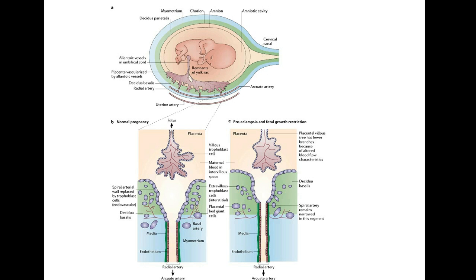Here is the picture. In normal pregnancy, there are villus trophoblast cells. When preeclampsia with fetal growth restriction develops, the placental villi become fewer, and you can see altered blood flow characteristics as well as changes in the radial artery.